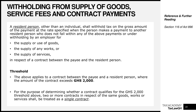An individual making payments for goods is generally not a withholding agent unless in the course of conducting a business. A resident person other than an individual is required to withhold tax on the gross amount of a payment where the person makes payments for the supply of goods, works, or services in respect of a contract between the payee and the resident person where the contract amount exceeds two thousand Ghana cedis.